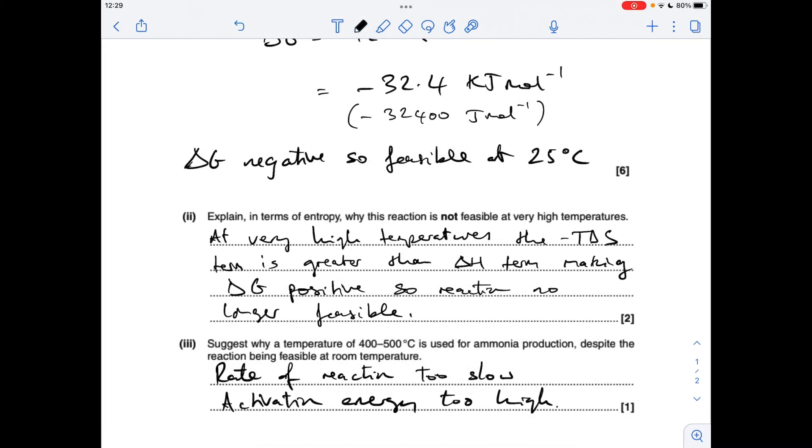And the final part of the question, feasibility calculations don't take the kinetics, or the rate of the reaction, into account. So you could say something like, the rate of reaction's too slow, or the activation energy's too high. And that's why they have to bump the temperature up to that 400 to 500 degrees C.